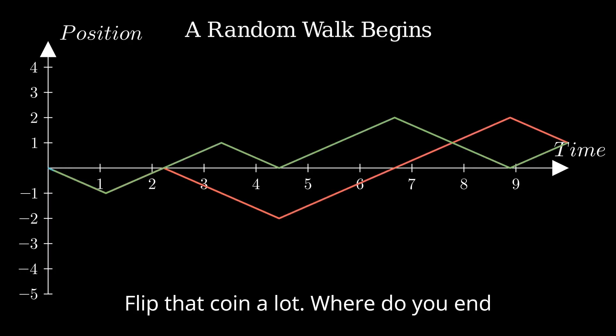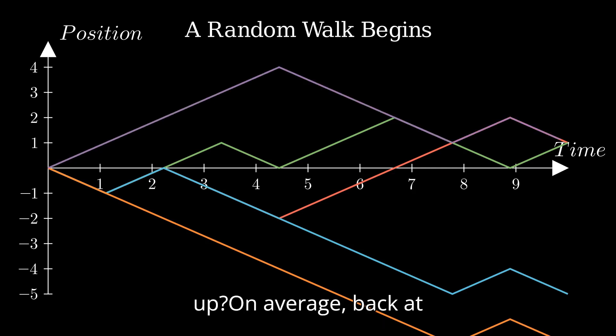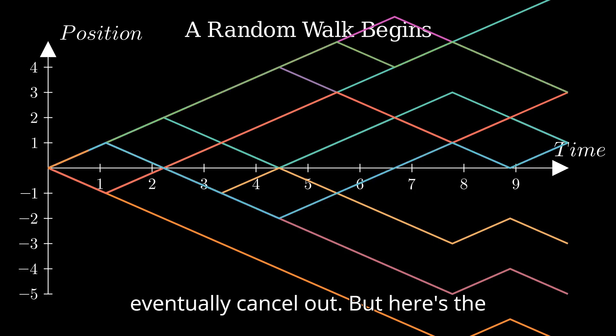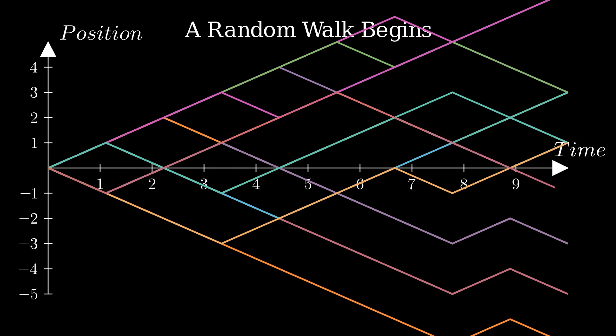Flip that coin a lot. Where do you end up? On average, back at zero. Notice that the steps eventually cancel out. But here's the twist: swings get wilder over time. That's variance growing over time—a key concept in finance. The more steps, the more chaos. And that's the beauty of random walks.